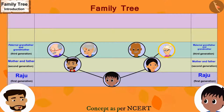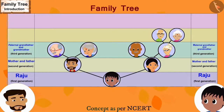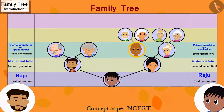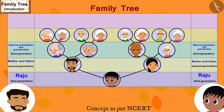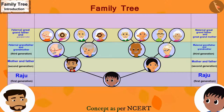Look — for your maternal grandmother's parents, we will draw two lines and write their names. Then we will draw two lines for your maternal grandfather's parents and write their names. The names of your paternal grandfather and grandmother's parents will also be added in the same way. These are your maternal and paternal great-grandfather and great-grandmother. This is our fourth generation.